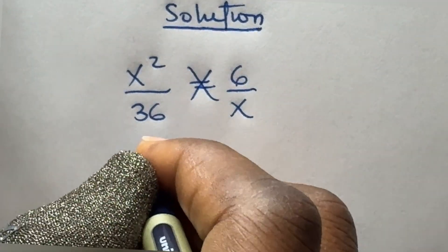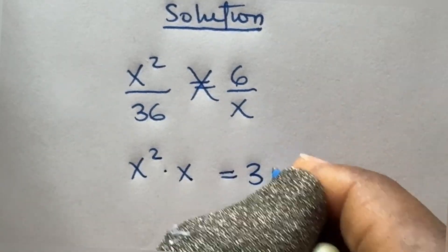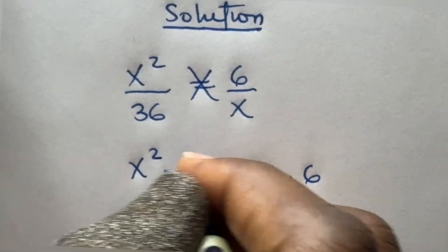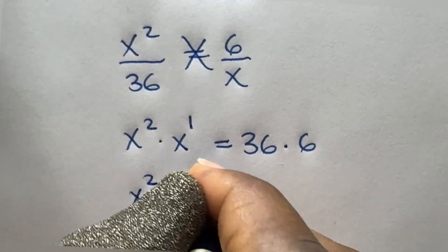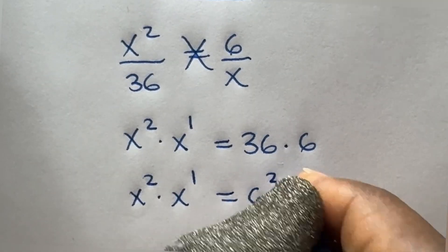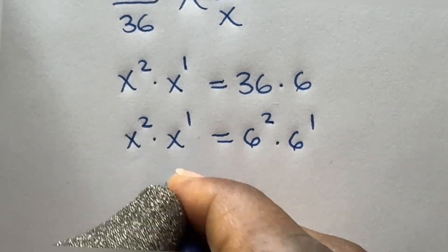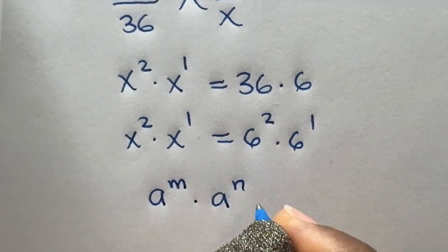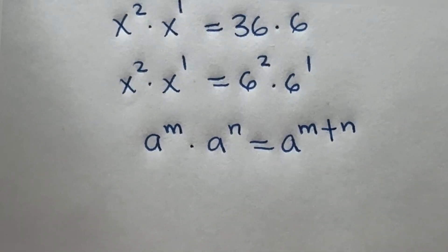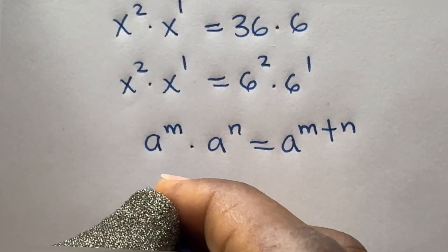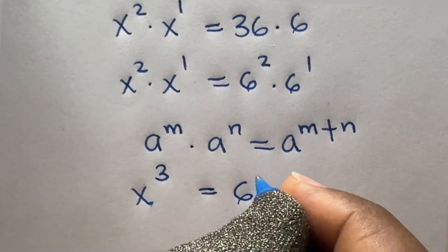Cross multiplying gives x raised to power 2 times x is equal to 36 times 6. This is x raised to power 1, so x raised to power 2 times x raised to power 1 equals 36 raised to power 2 times 6 raised to power 1. By the law of indices, a raised to power m times a raised to power n equals a raised to power m plus n. Adding the powers gives x raised to power 3 equals 6 raised to power 3.